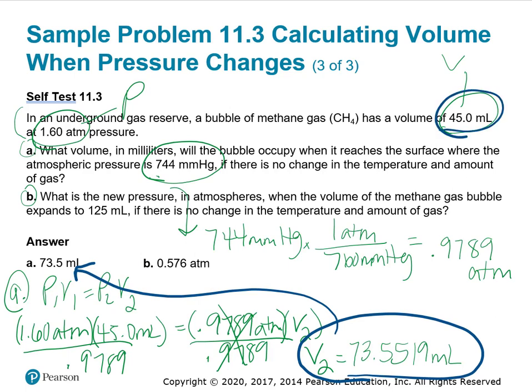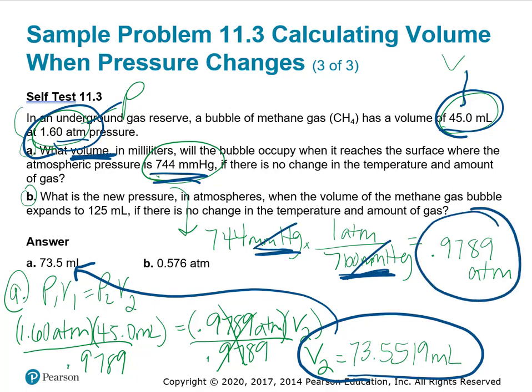For part A, we were given volume, an initial volume, and initial pressure in atmospheres. It wants to know a second volume after the pressure goes to 744 millimeters of mercury. That's not the same unit as atmospheres, so let's convert. There's 760 mmHg in one atmosphere, giving us 0.9789 atmospheres. That's our P2. So P1V1 equals P2 times V2. Divide both sides by 0.9789.